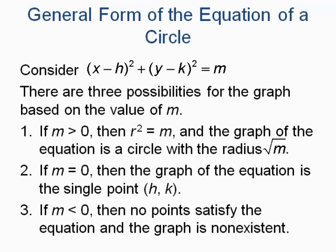In the center radius form, x minus h squared plus y minus k squared equals M, there are three cases based on M. If M is greater than 0, then r squared equals M and the graph is a circle with radius equal to the square root of M. If M equals 0, the graph is simply the center point (h, k). If M is less than 0, the graph is non-existent.